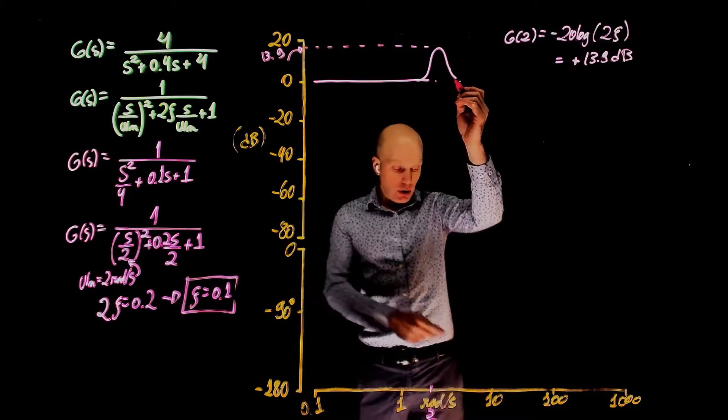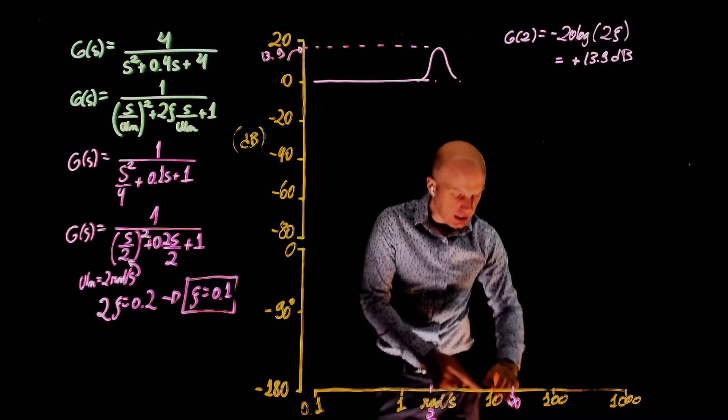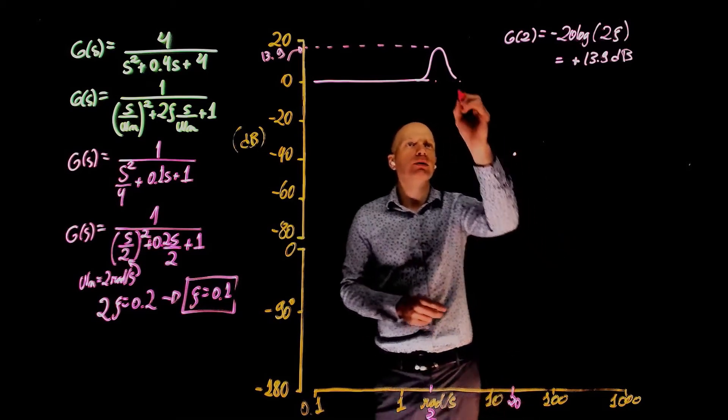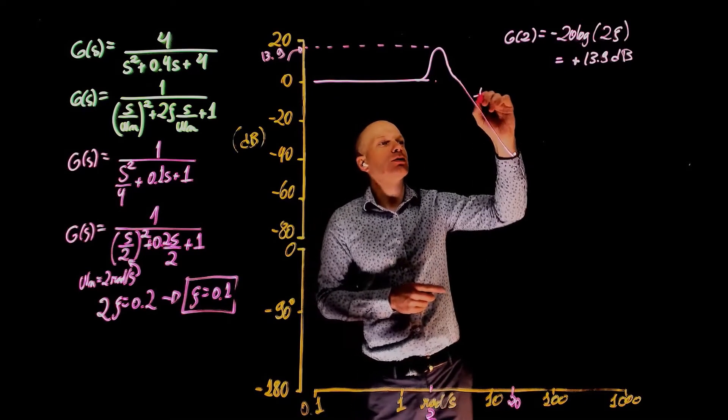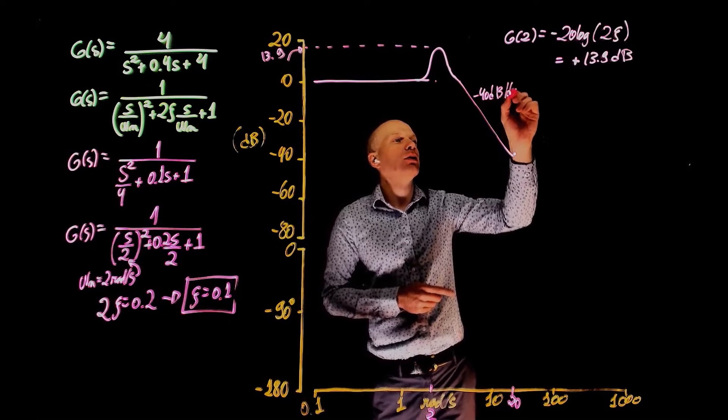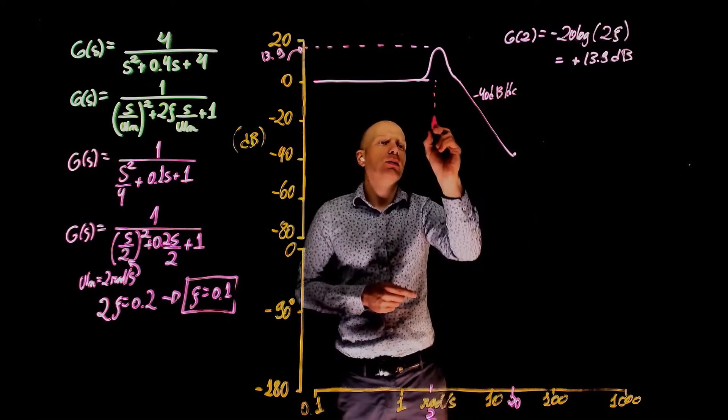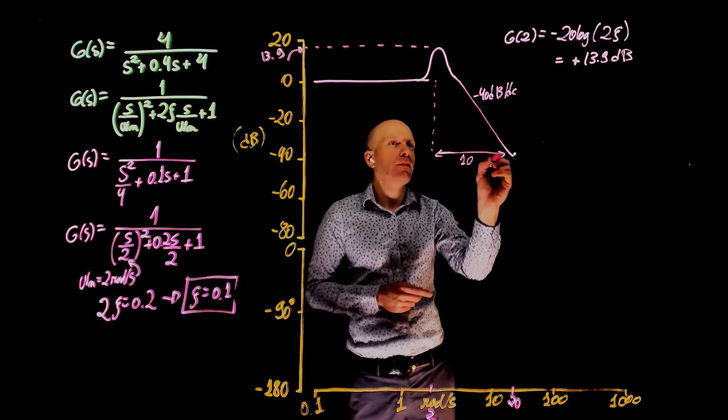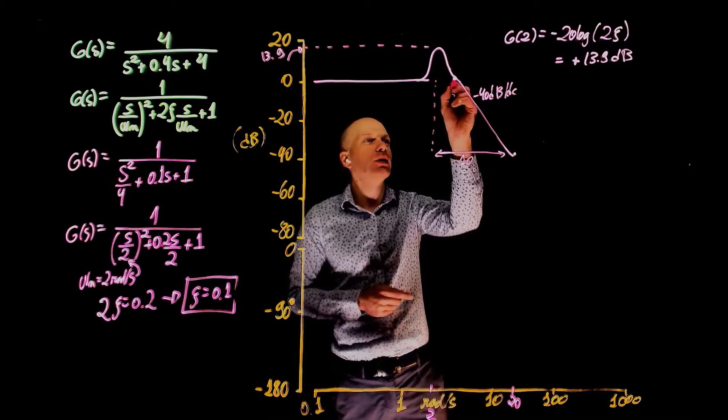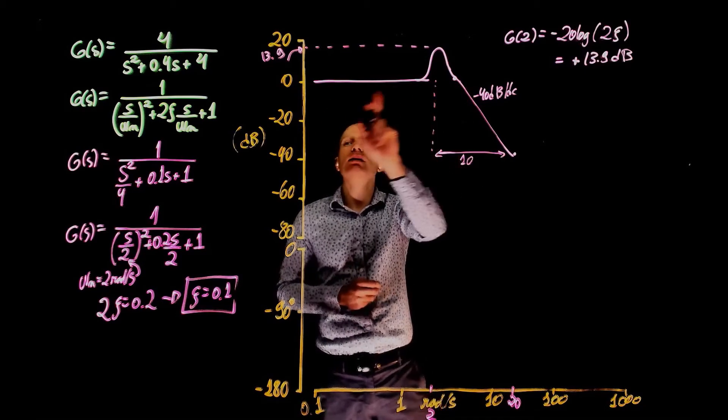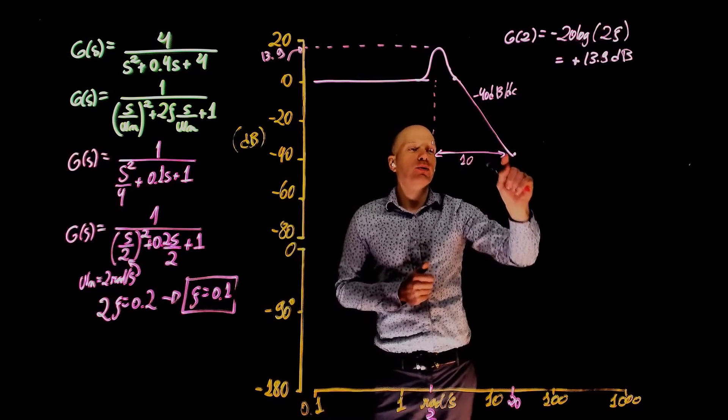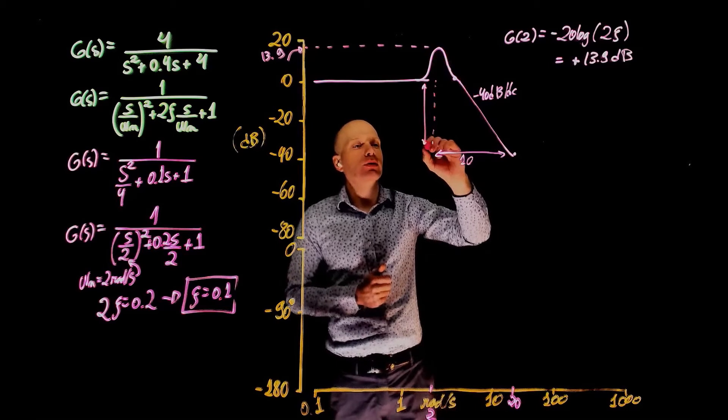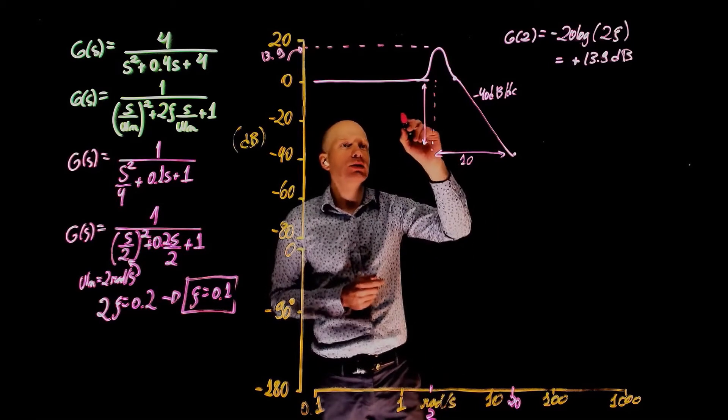So if here we are at 0, when you go to 20 radians per second, we should go down by 40. We should be around negative 40 decibels. Because this slope is negative 40 dB per decade. And here we moved by a factor of 10 in the frequency. Now notice that we go down based on the value of the Bode plot immediately before the bump.